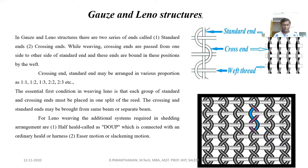For Leno production, the dupe or half yield is a very important part to produce the crossover effects. The fabric surface shows crossover effects like this. The blue color represents the standard end and the red color one represents the crossing ends.